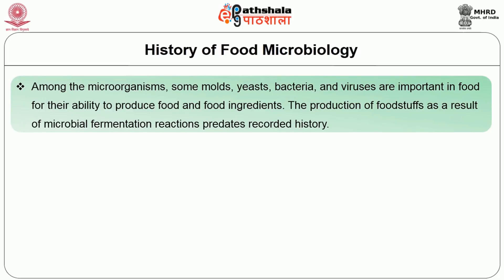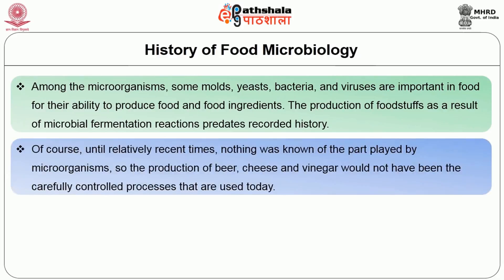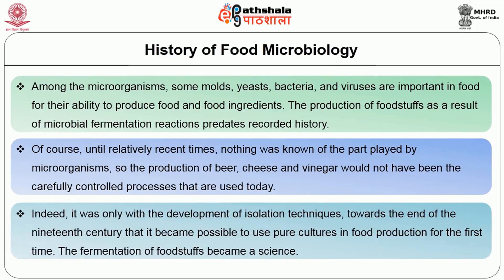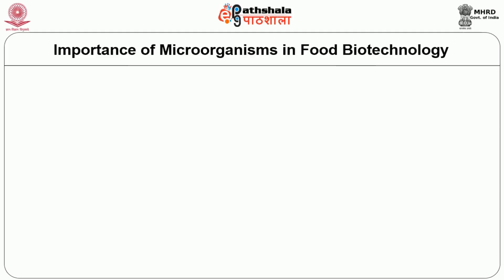This paved the way for the establishment of early food microbiology in the 20th century. Among the microorganisms, some molds, yeast, bacteria and viruses are important in food for their ability to produce food and food ingredients. The production of foodstuffs as a result of microbial fermentation reactions predates recorded history. Until relatively recent times nothing was known of the part played by microorganisms. It was only with the development of isolation techniques towards the end of the 19th century that it became possible to use pure cultures in food production, and for the first time fermentation of foodstuffs became a science.